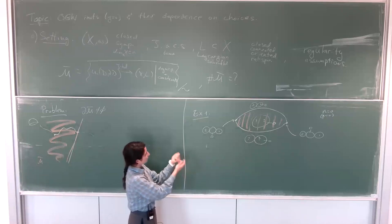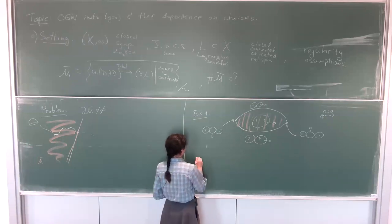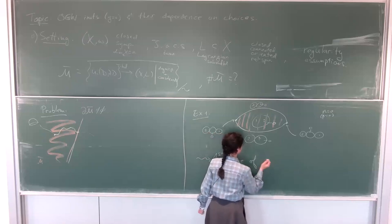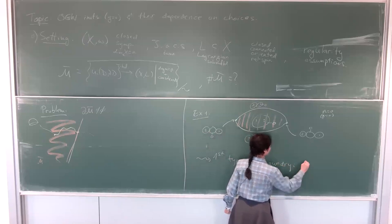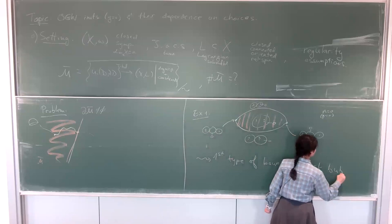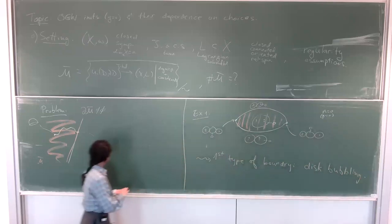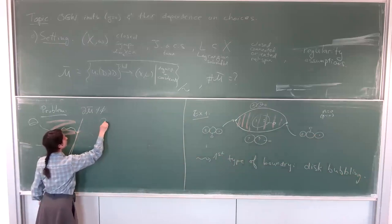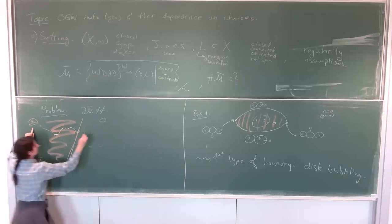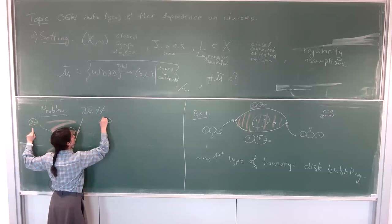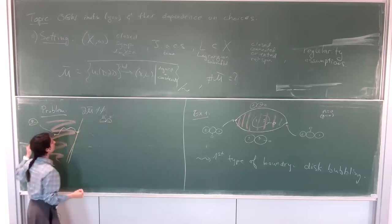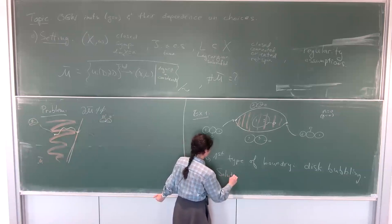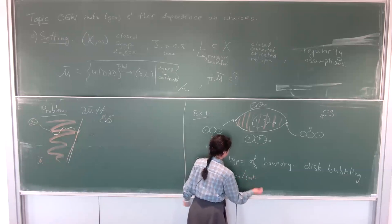This is a description of this particular moduli space, and as you see it does have a boundary. The moral is that it exemplifies one type of boundary, which comes from disk bubbling. In this picture, when we reach this boundary point, the configuration we get is a disk of degree beta splitting into smaller disks — one of degree beta prime and one of degree beta double prime. The solution to this kind of problem, or the tool by which we fix it, is the bounding chain.